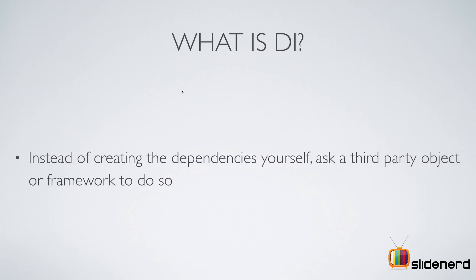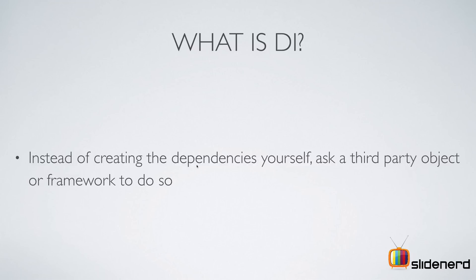So what is dependency injection? Now that you understand what a dependency is, it simply means letting a third person create the object that you need. The customer will not create an account object inside its constructor or method. Rather, it will rely on a third party to supply the right object at the right time. You will understand why when we go through an example that shows what happens without dependency injection versus how things progress.